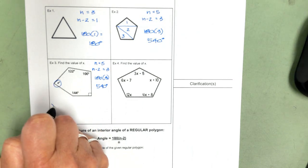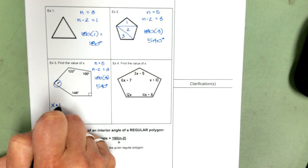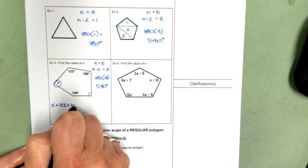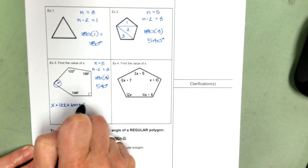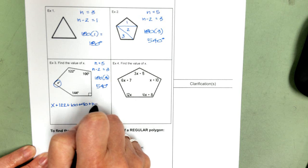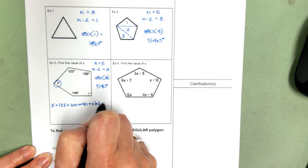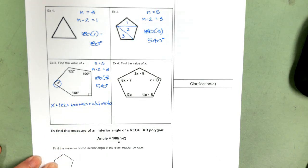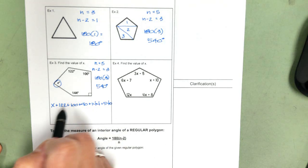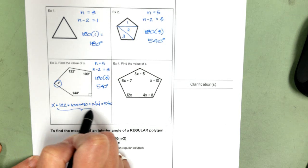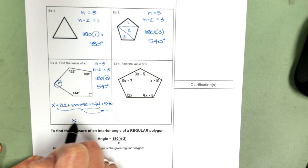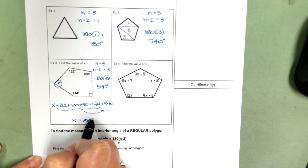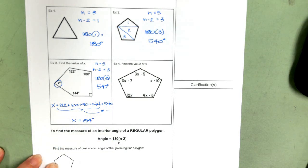So I have the angle that we're looking for, plus 122, plus 100. This box indicates that that's a right angle, plus 90, plus 144, has to equal 540. We add all of these up, and then subtract it from 540, and we get x equals 84.